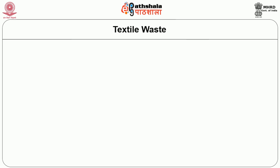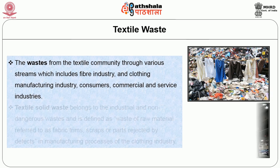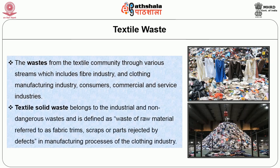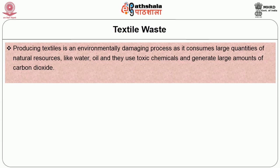What is textile waste? The waste from the textile community comes through various streams which include the fiber industry, clothing manufacturing industry, consumers, and commercial and service industries. Textile solid waste belongs to the industrial and non-dangerous waste category, defined as waste of raw material such as fabric trims, scraps, or parts rejected due to defects in manufacturing processes or the clothing industry. Producing textiles is an environmentally damaging process as it consumes large quantities of natural resources like water and oil, uses toxic chemicals, and generates large amounts of carbon dioxide.